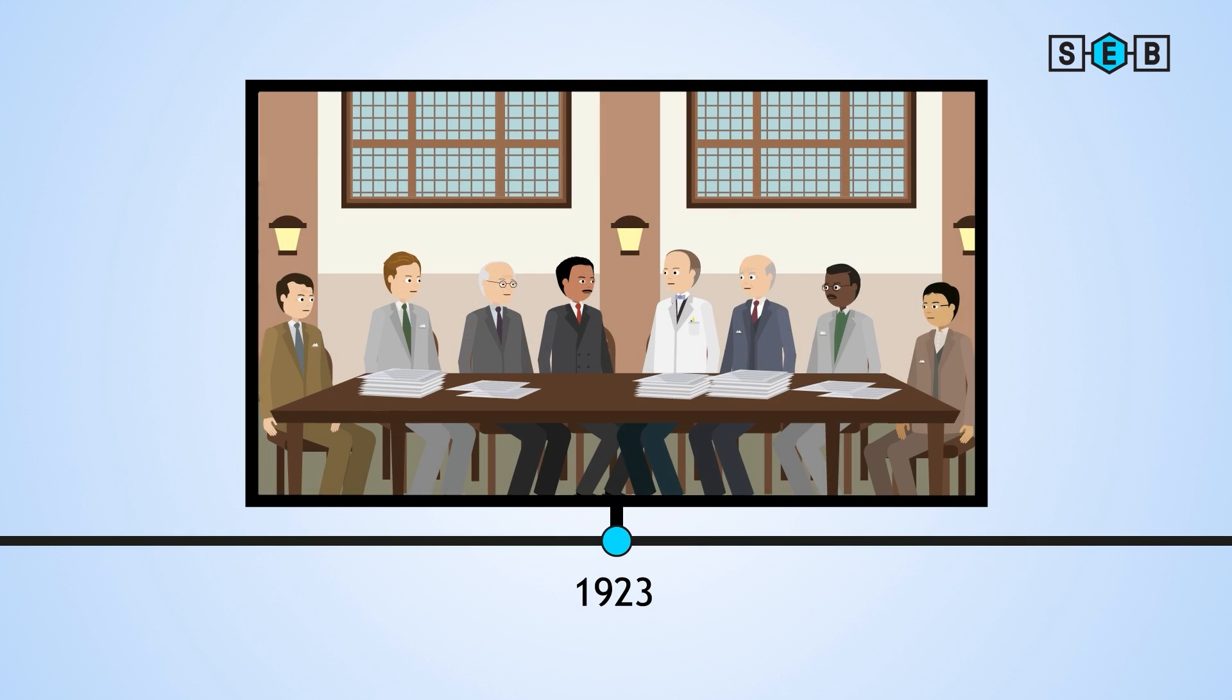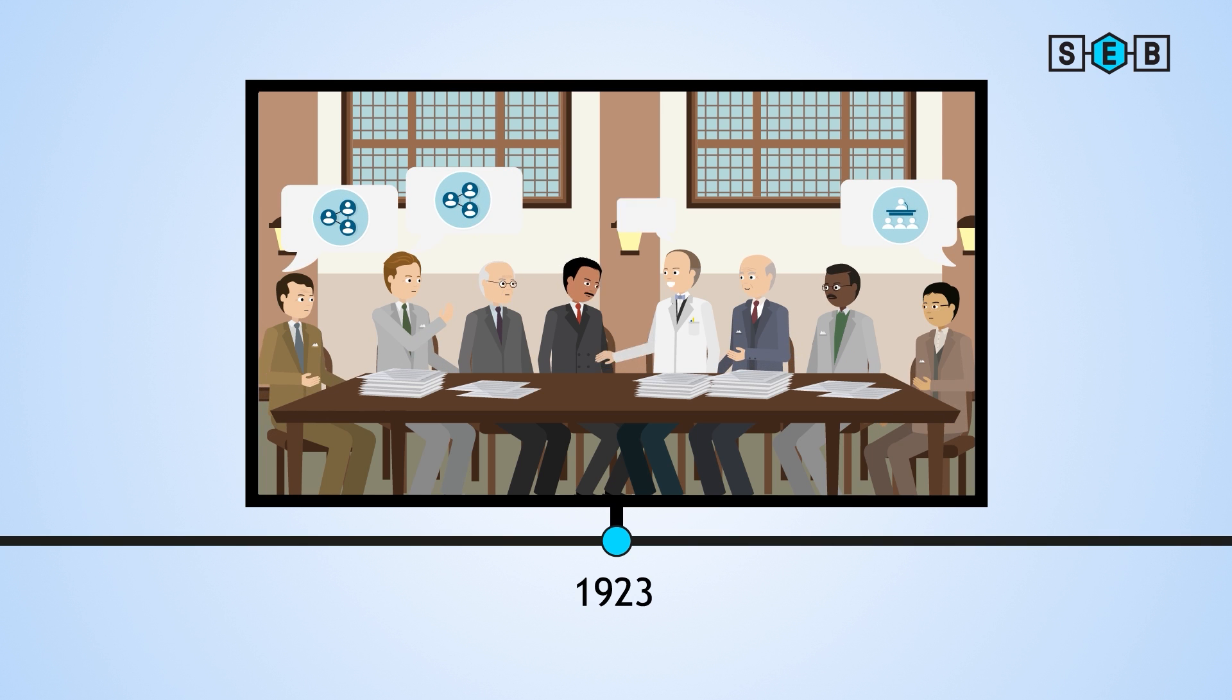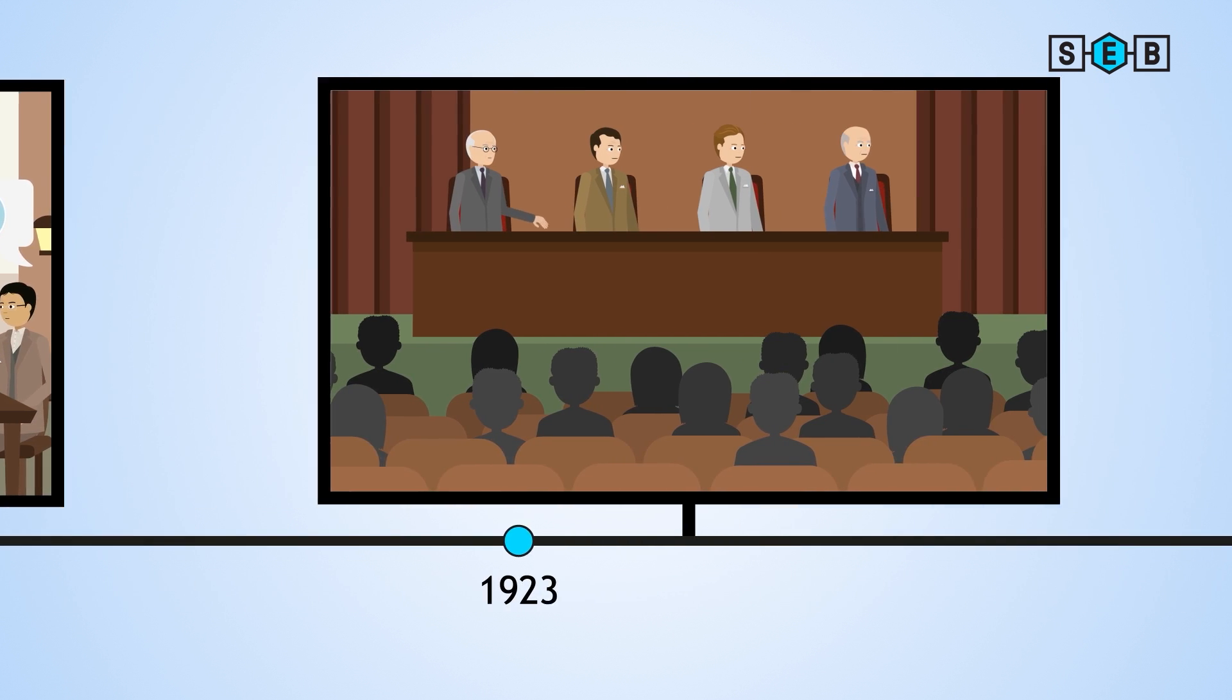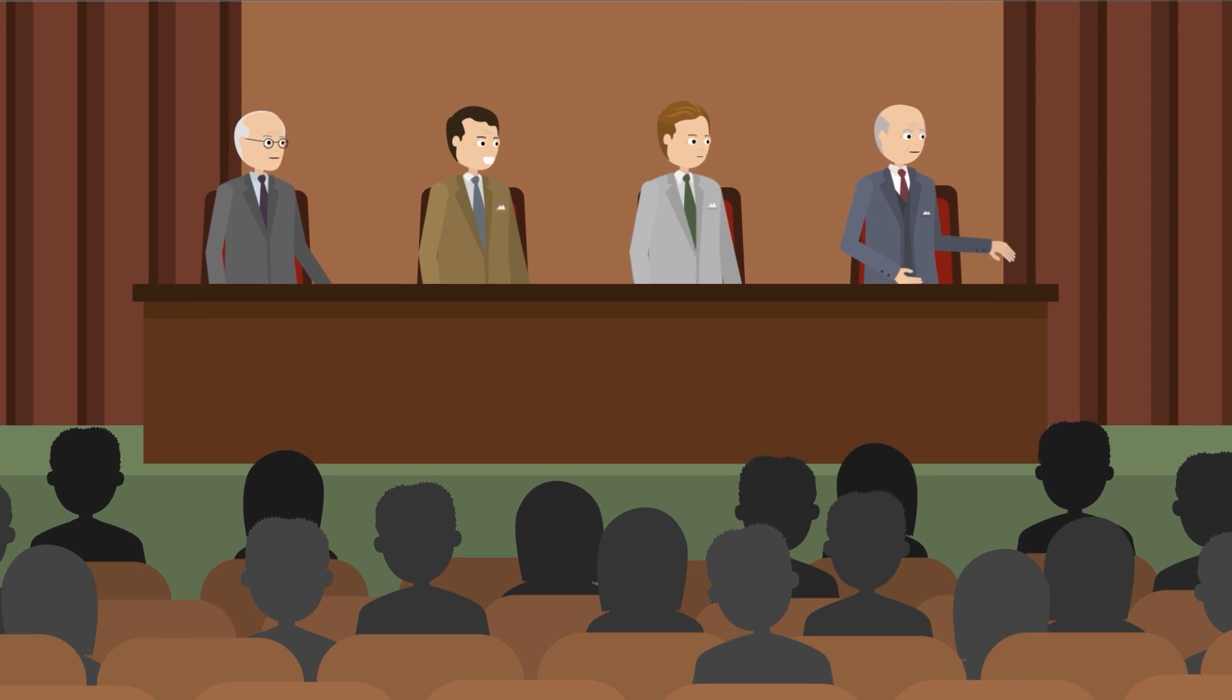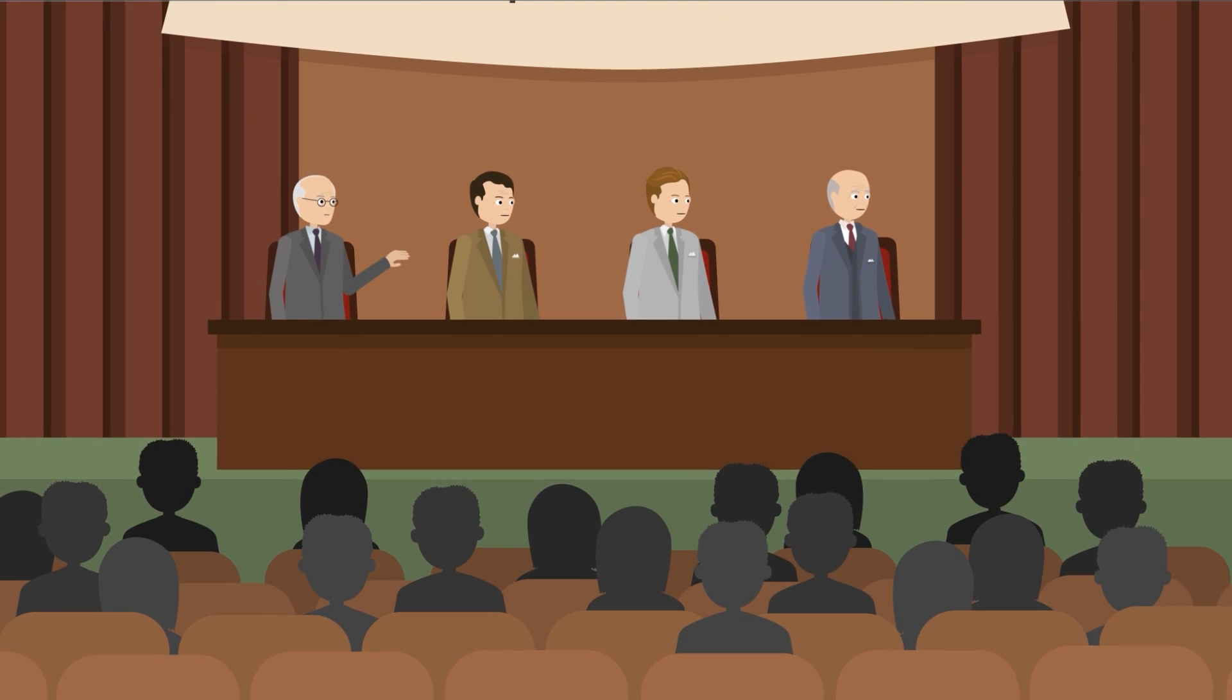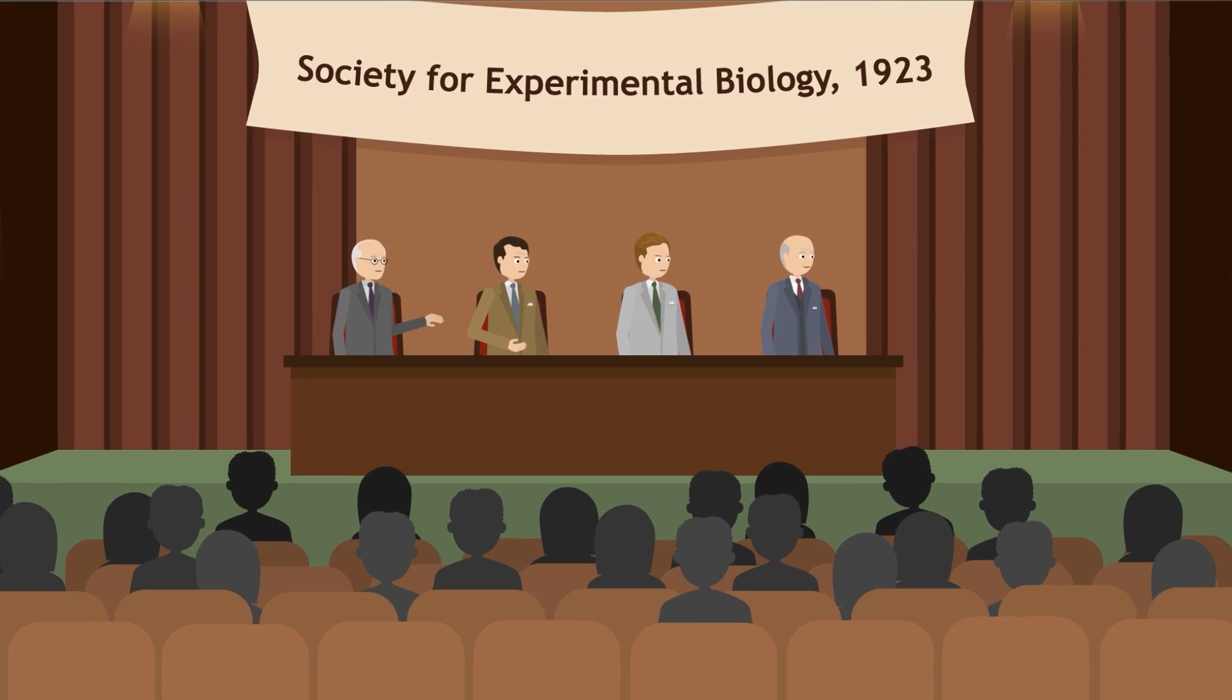During a 1923 board meeting, members decided an association and conference would help promote experimental biology. So the first conference was held in December that year, with great success. It was here that the association was formally deemed the Society for Experimental Biology.